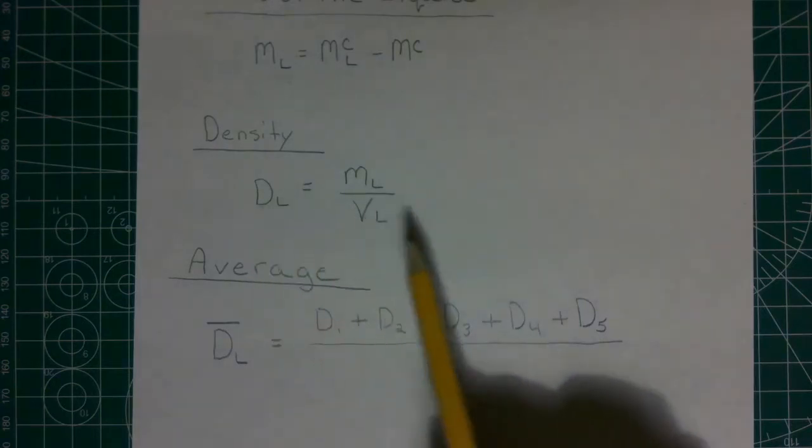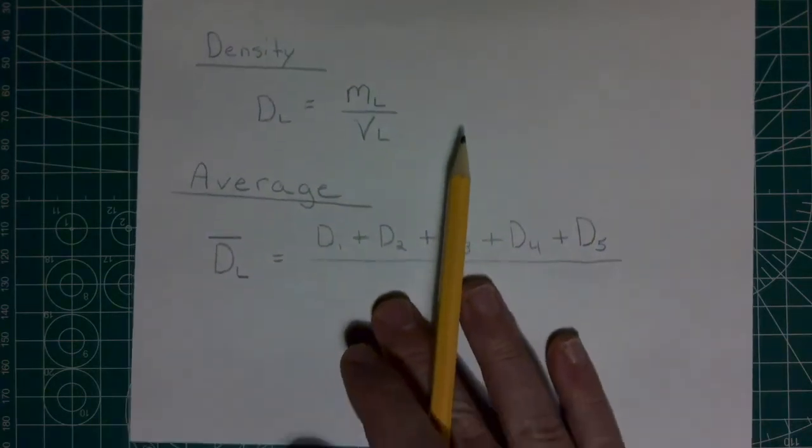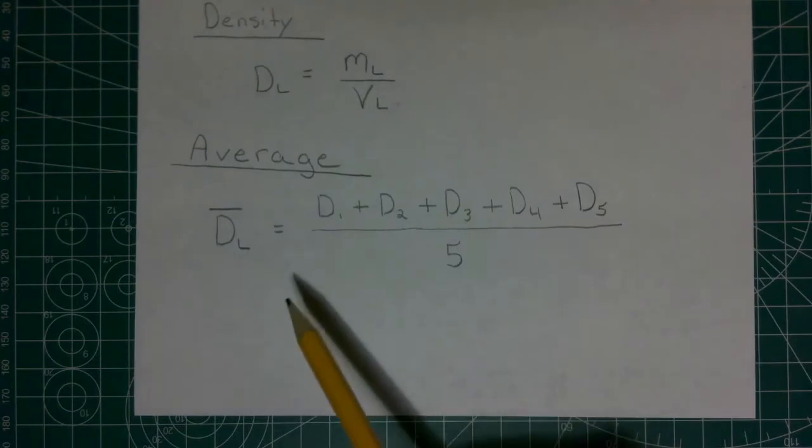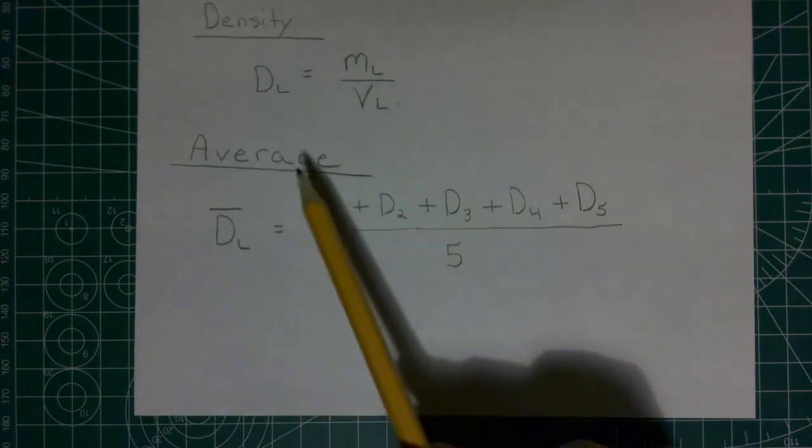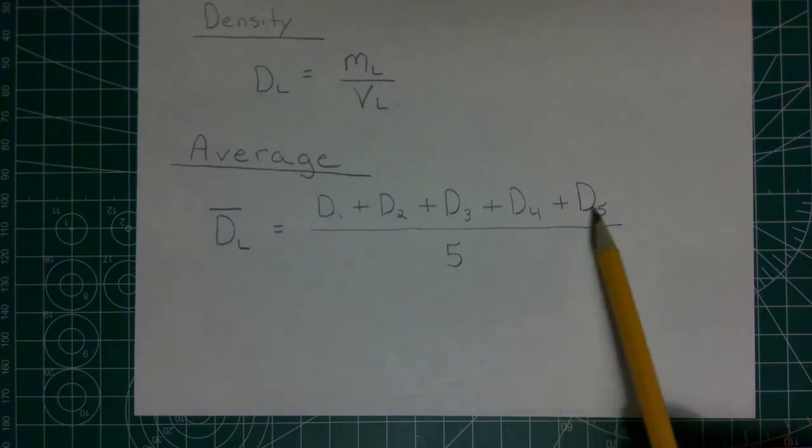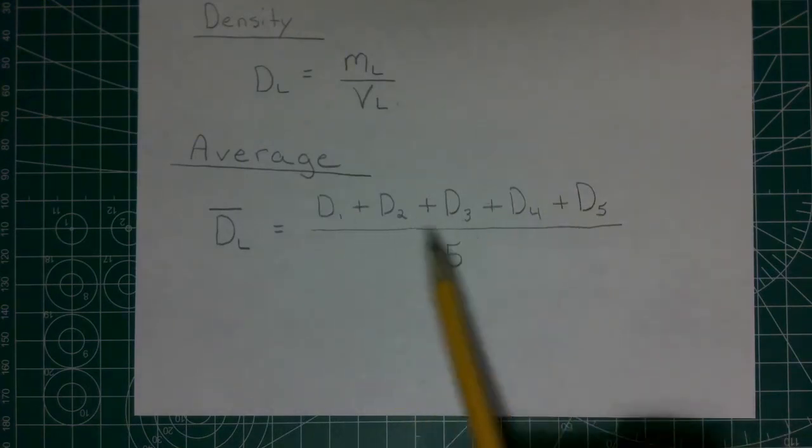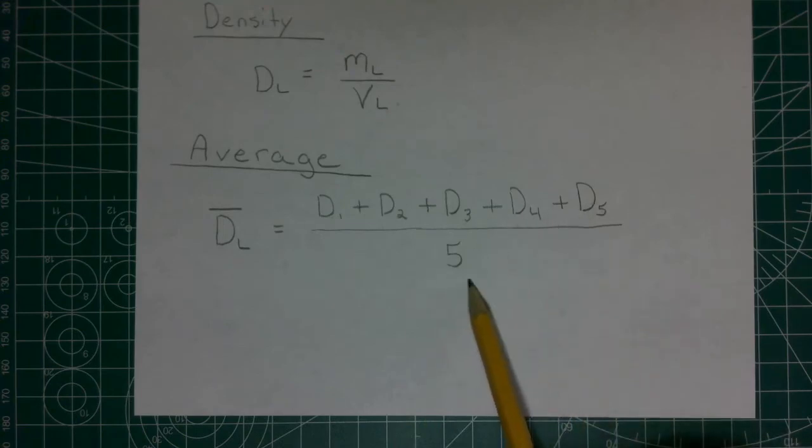We're going to do this for each of the five trials. And then at the very end, we're going to take the average of all those five trials by adding the density values that we calculated up here for each trial, and dividing it by five, which is the number of trials. There are five trials, so we divide by five.